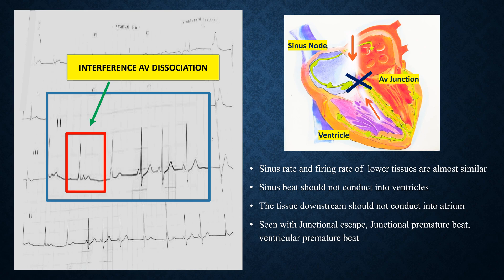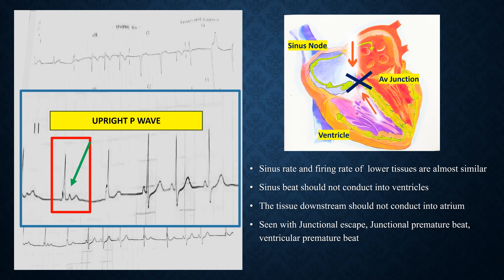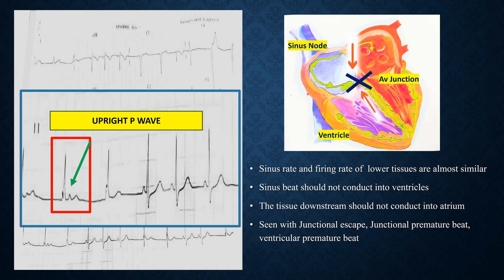We've seen that the sinus node going down into the ventricles produces a normal looking complex. But how do we know whether the beat from the lower pacemakers has conducted into the atrium? We need to look at the P waves — if the junctional beat has conducted upward into the sinus node, the P wave morphology should not be upright; it should be an inverted P wave. In this case there was an upright P wave, which was actually a sinus beat coming down and blocking, so the junction beat could not conduct upward into the atria to produce inverted P waves.